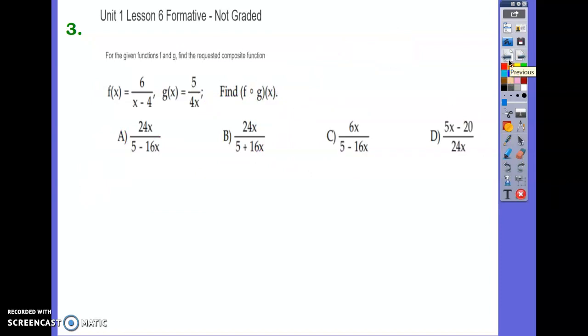Number three. For the given functions f and g, find the requested composite function. Okay. We're asked to find f of g of x. Now, they're not giving us the value for x. So we're just going to substitute this g of x in to f of x as our x.